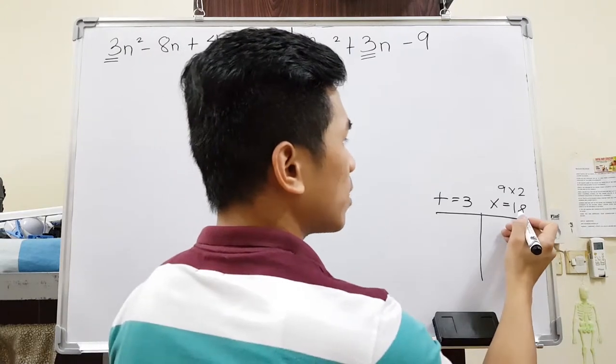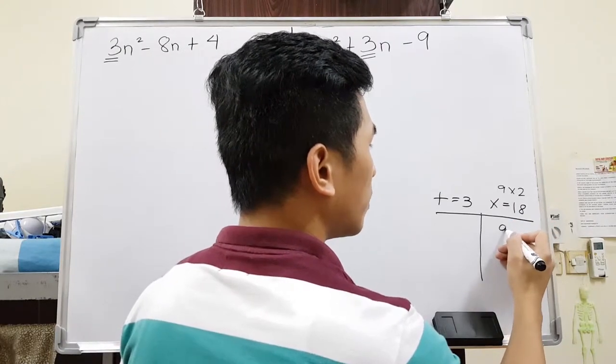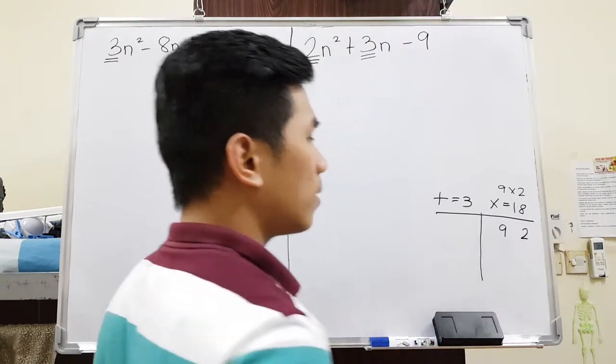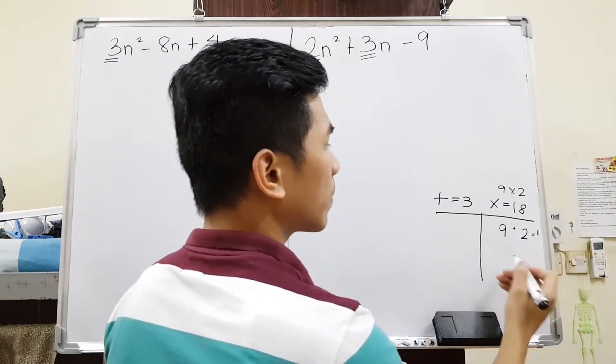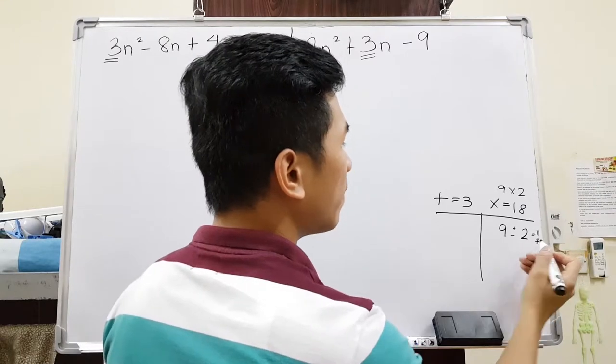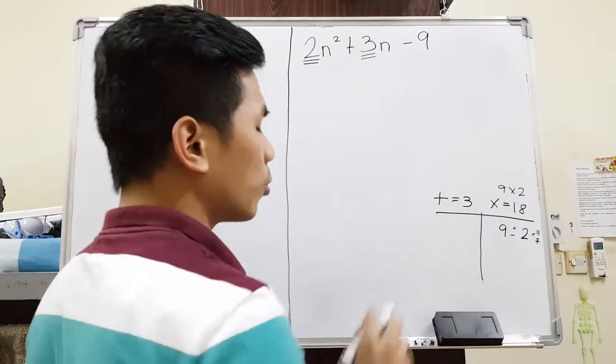Now, what are the two numbers that multiplies to 18? So we can start with 9 and 2. But you have to ask yourself, if I add this, I will be getting 11. If I minus this, I will be getting 7. But I need 3. It means it's not going to work.